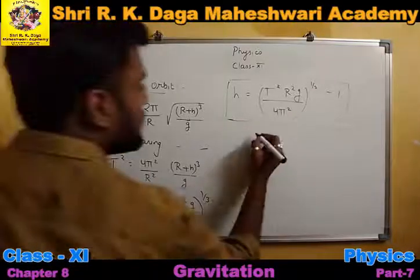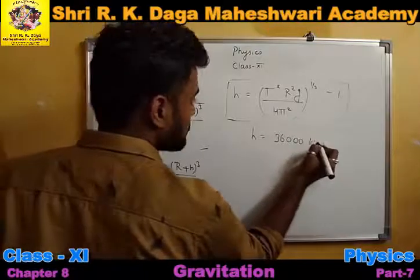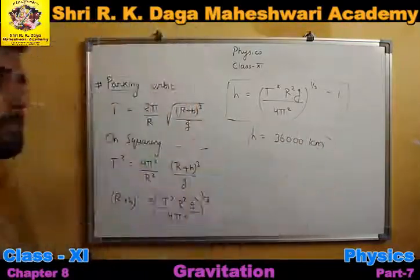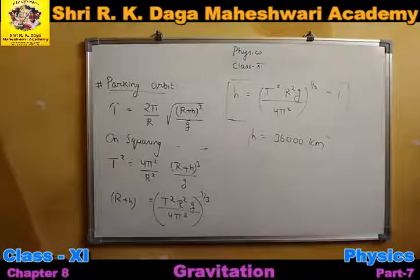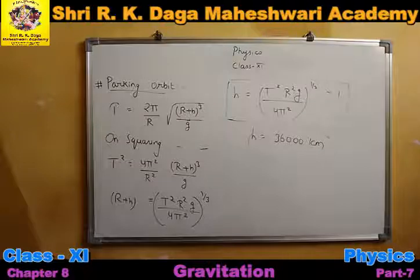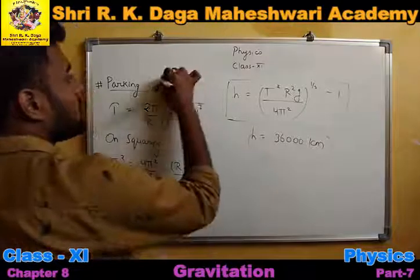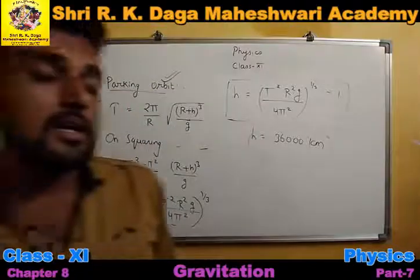When you put in all the values, you get h approximately equal to 36,000 km. This is the particular height at which if any orbit exists, countries can launch their satellites. Geostationary satellites are launched at approximately this height, and the orbit at this height is called the parking orbit.